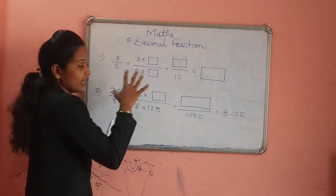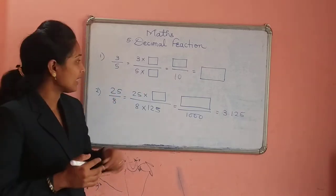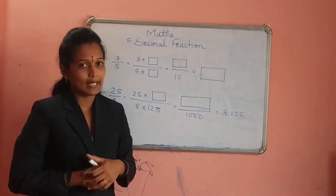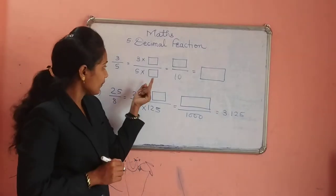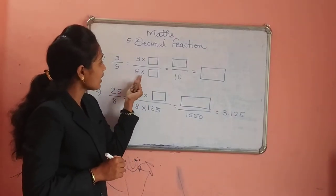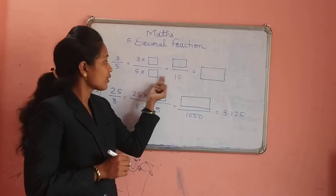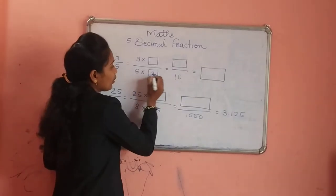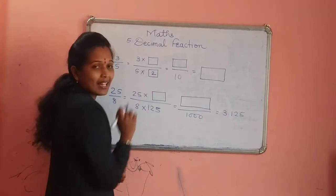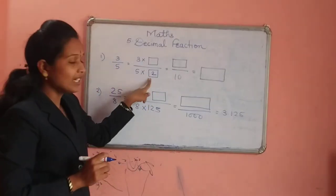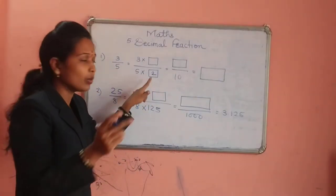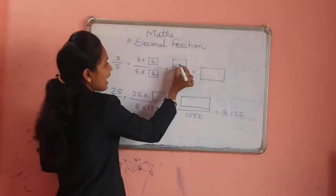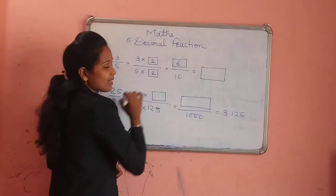We know that in fifth standard we learned that we have to multiply both numerator and denominator by the same number. By which number can we multiply 5 so our answer comes 10? If we multiply by 2, 5 becomes 10. So at the denominator we multiplied by 2, so the numerator we also multiply by 2: 3 times 2 gives 6.